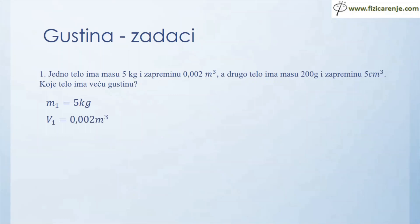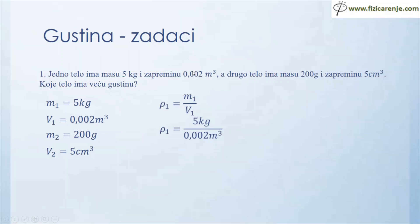Za prvo telo znam da je masa 5 kg i zapremina 0,002 m³. Za drugo telo je masa 200 grama, a zapremina 5 cm³. Gustina prvog tela će biti jednaka M1 kroz V1. Umjesto M1 pišemo 5 kg, a umjesto V1 0,002 m³. Kada 5 podelim sa 0,002 dobićem 2500 kg/m³ i to je gustina prvog tela.